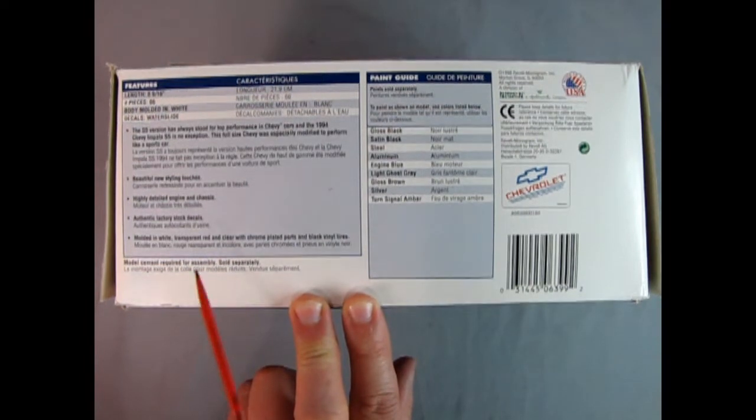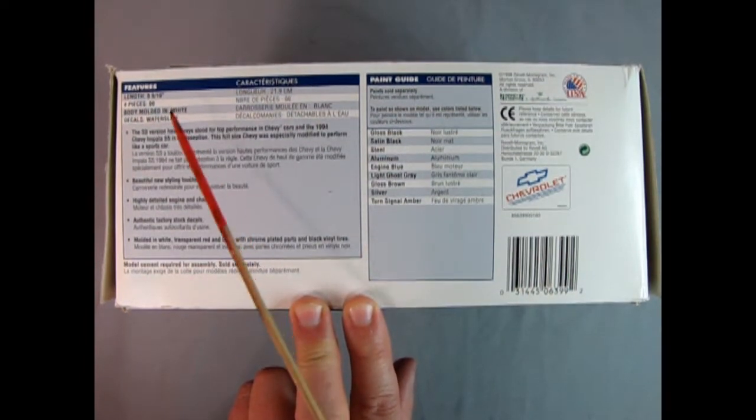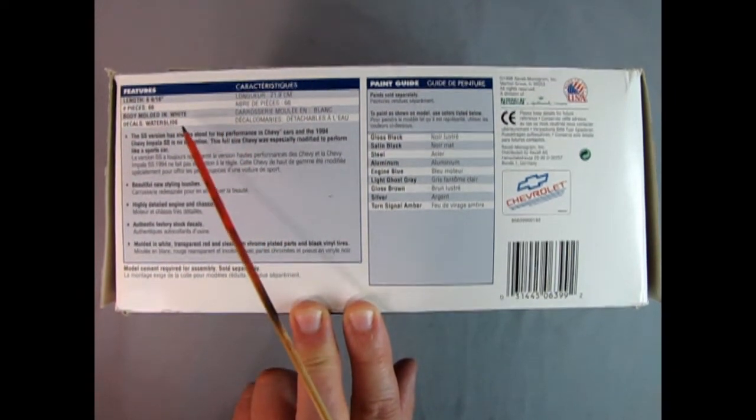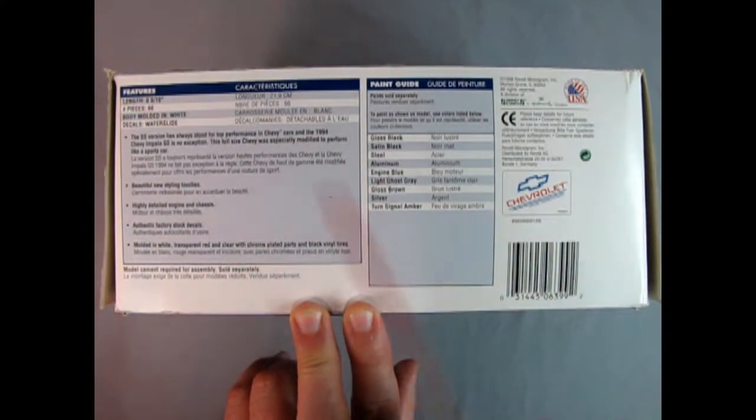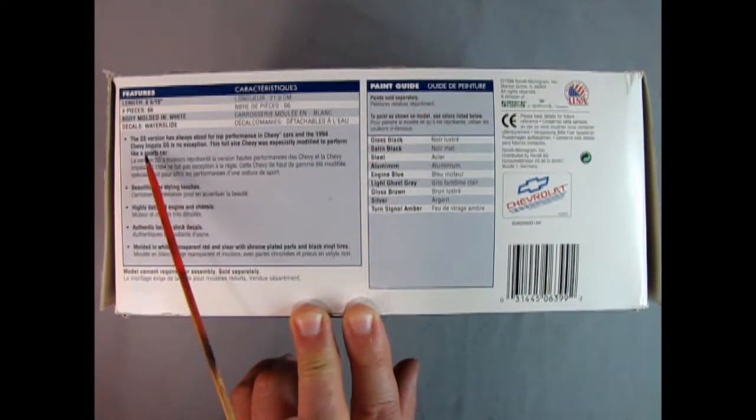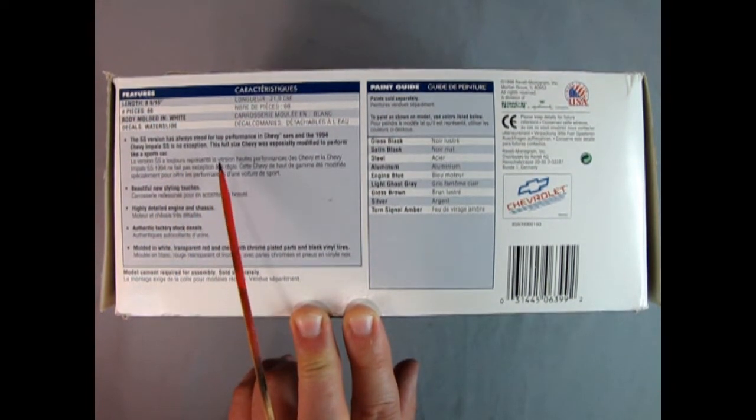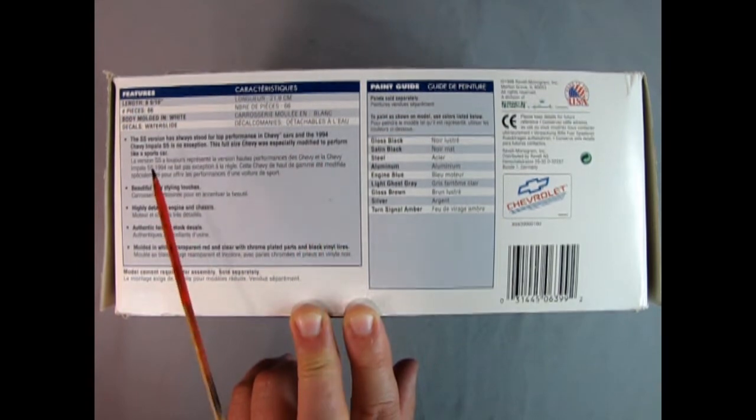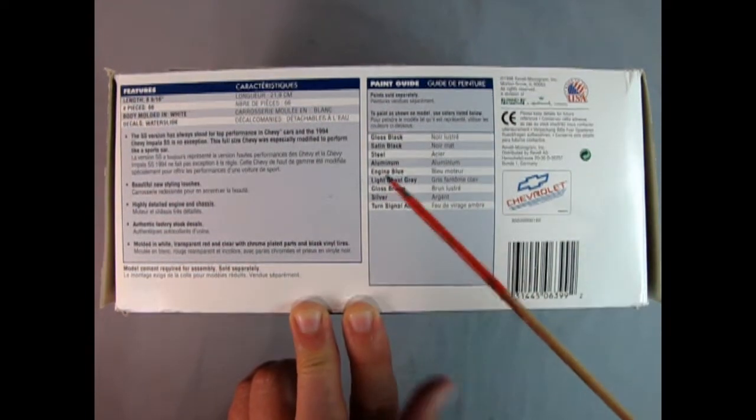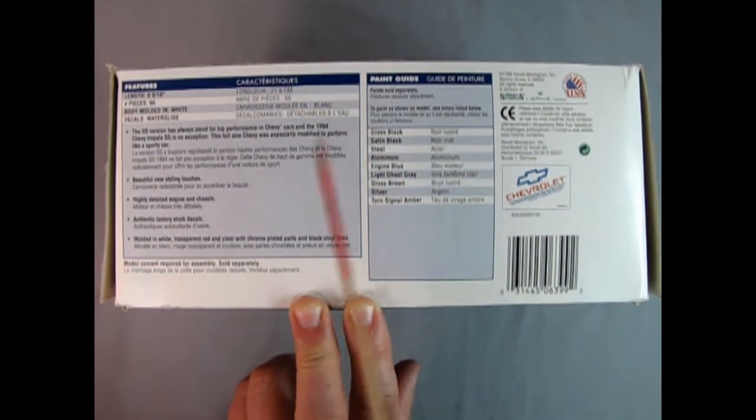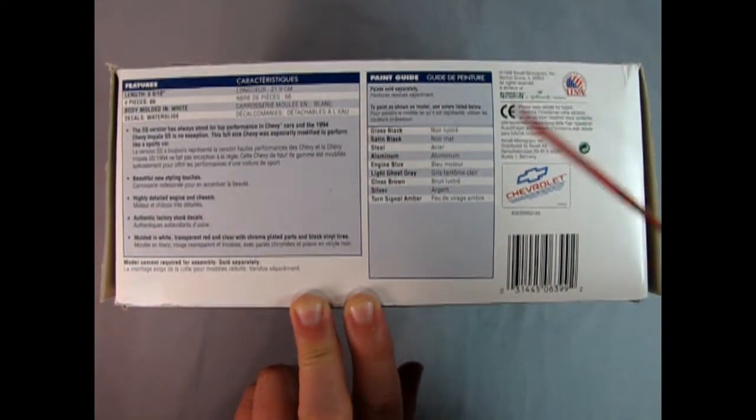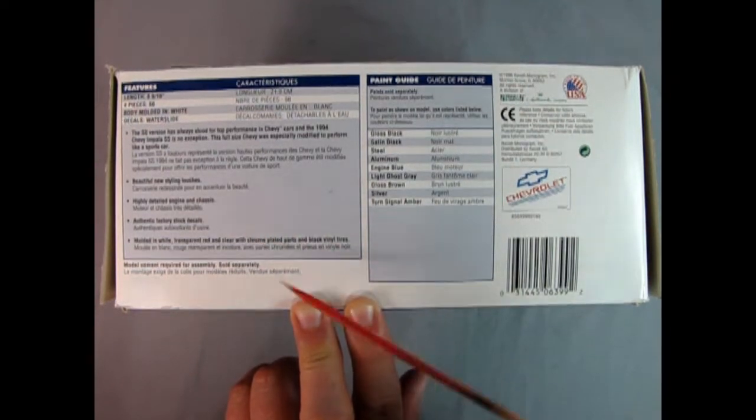On this side of the box we can see all the wonderful write-ups for the car. It is 8 and 9/16 inches long, 66 pieces, body molded in white and has water slide decals. It says the SS version has always stood for top performance in Chevy cars and the 1994 Chevy Impala SS is no exception. This full-size Chevy was especially modified to perform like a sports car. Interesting because this is made in '98 and inside it was talking about the '96. So what year is this thing exactly? Probably a '94.